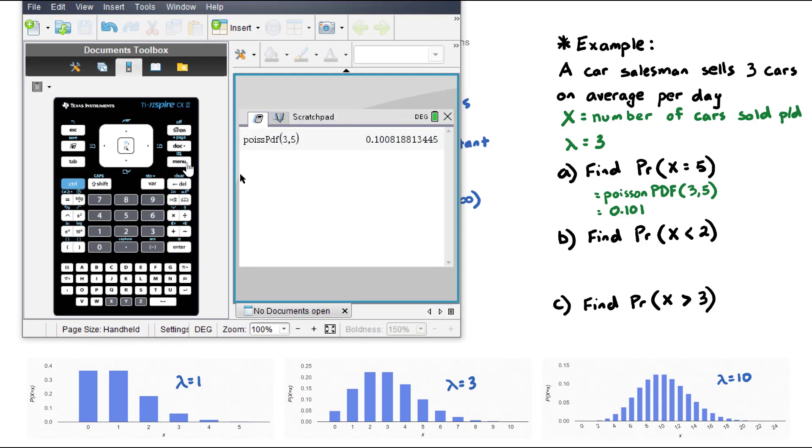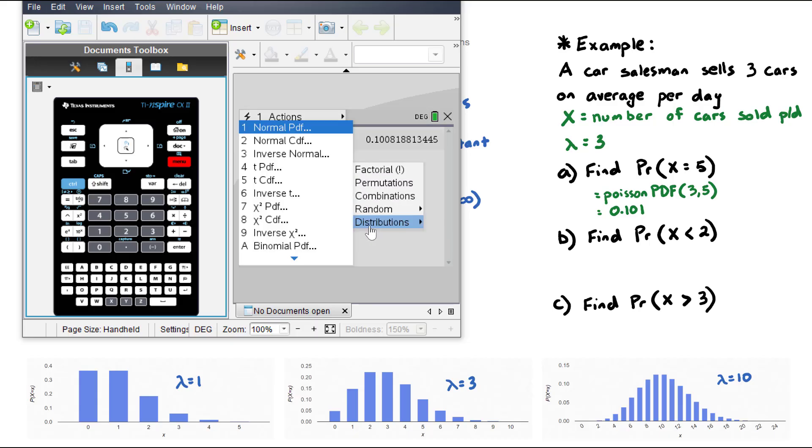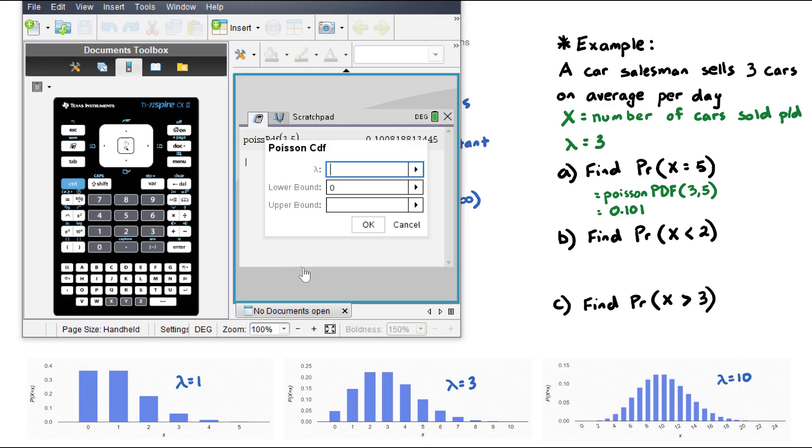Let's find this using the Poisson CDF command on our calculator. We go menu, probability, distributions, right down to Poisson CDF. Again, our lambda is 3. This time it asks us for the boundary. The lower boundary is 0, the least amount of cars. The upper boundary will be 1, because we're looking at less than two cars. Hit OK, and we get 0.199.